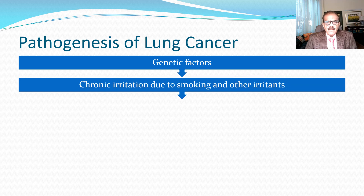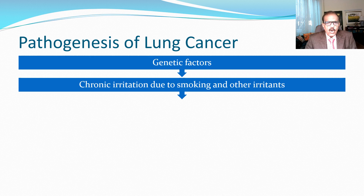The most important carcinogen, proven beyond any doubt, is chronic smoking. Many other pollutants are also considered to be contributing. Active smoking and to a certain extent passive smoking also contribute. This smoking includes cigarette, hookah, pipe, cigar, or even vaping. So all types of smoking can be responsible for lung cancer.